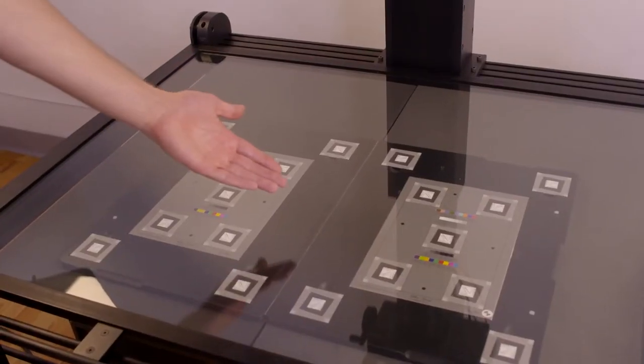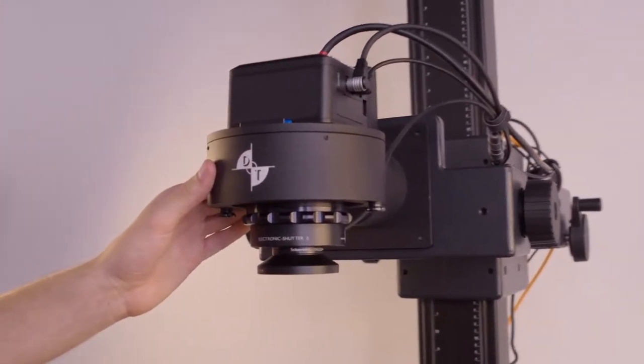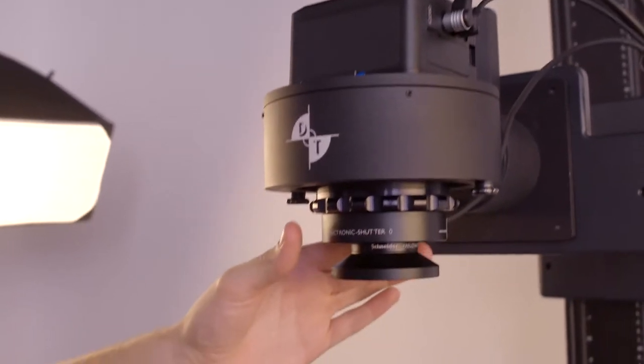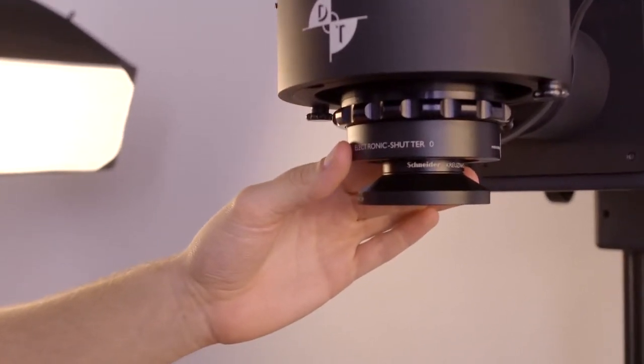The system is comprised of several components: the DT RGC 180 camera bench, the DT R-Cam body, a Phase One digital back, and a Schneider electronic lens. In this case, a 72mm.